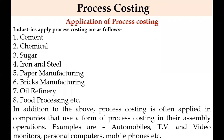Process costing is employed in the following types of industries: cement, chemical, sugar, iron and steel, paper manufacturing, bricks manufacturing, oil refinery, milk dairy, flour mills, textile mills, food manufacture, biscuit factories, plastic manufacturers, and paint manufacturers. Many industries follow process costing because the raw material has to pass through different processes to manufacture the final product.